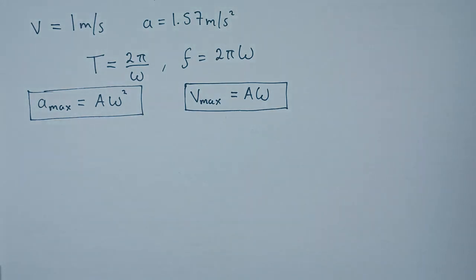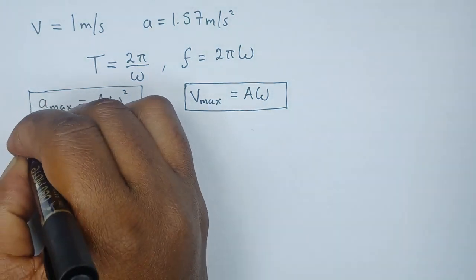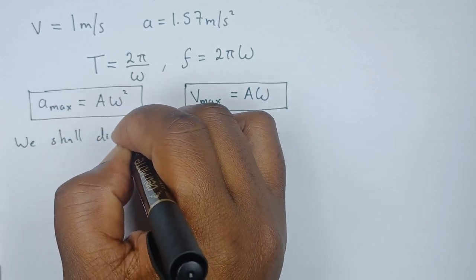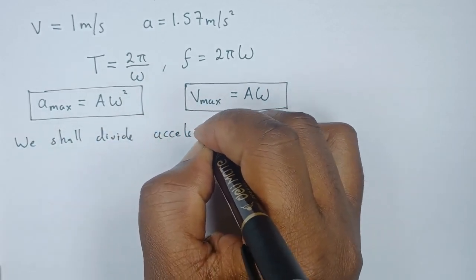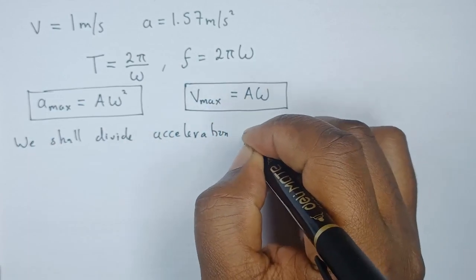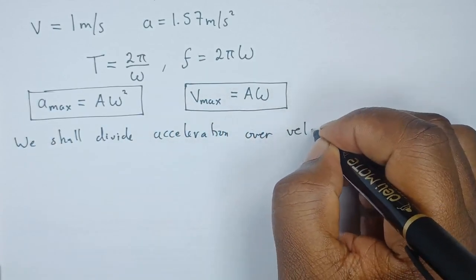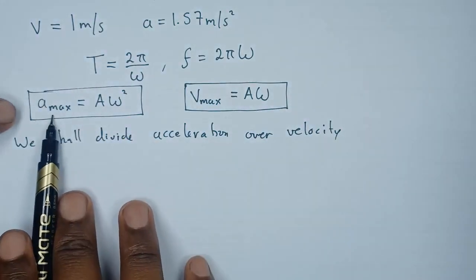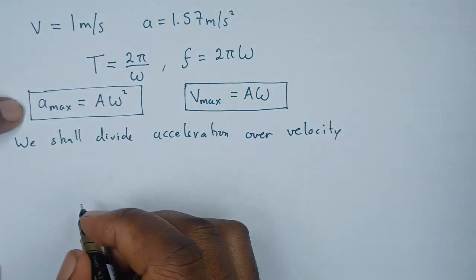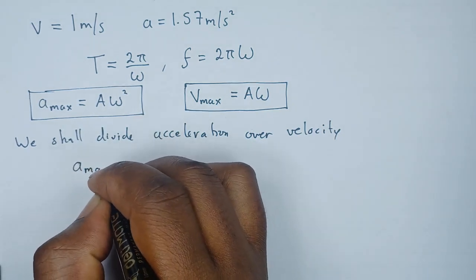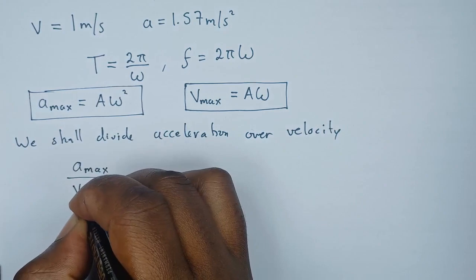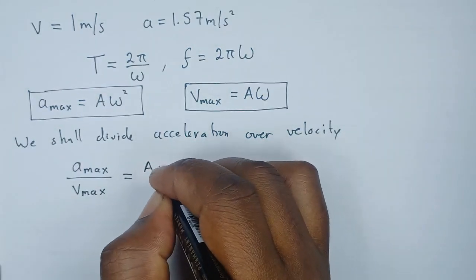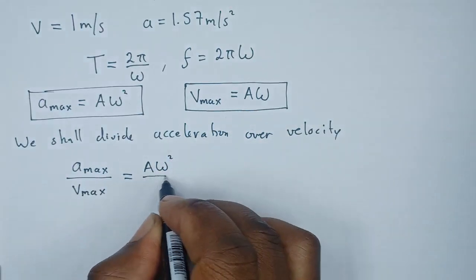So what we want to do is, since we have these two formulas, let's see how we can combine them. We shall divide acceleration over velocity. So from these two formulas we can say a_max divided by v_max, which is Aω² divided by Aω.